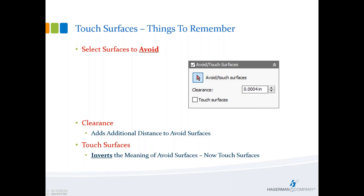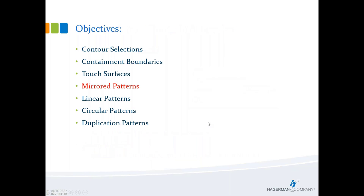Touch surfaces: by default, anything you select will avoid machining those surfaces. You can add a clearance value — for example, stay five thousandths away from a sidewall. Turning on Touch Surfaces completely reverses everything — avoid surfaces become touch surfaces. It's like two tools built into one. You just have to pay attention to whether you're avoiding or touching. Easy enough.